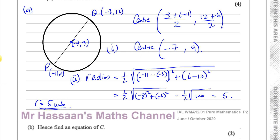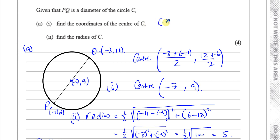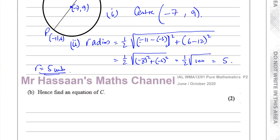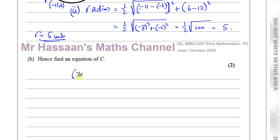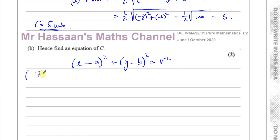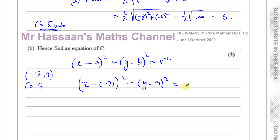That's the answer to part 2 of A. The center is minus 7, 9 and the radius is 5. Now we find the equation of C. The equation of a circle is given by: x minus the x-coordinate of the center, squared, plus y minus the y-coordinate of the center, squared, equals the radius squared. The center is minus 7, 9 and the radius is 5. So we have x minus minus 7 squared, plus y minus 9 squared, equals 25, giving us x plus 7 squared, plus y minus 9 squared, equals 25.